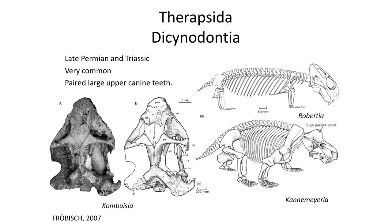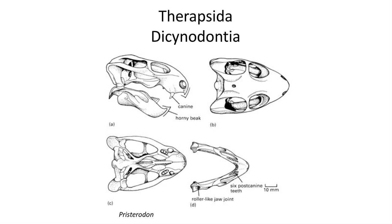The next group of Therapsida are the Dicynodontia, or two dog teeth, a common fossil group from the Permian and into the Triassic. They are the most common of the synapsid reptiles, particularly in the later half of the Permian, with hundreds of fossils known from South America and South Africa. The skulls are really unique in having large canine teeth as well as a beak-like structure for nipping vegetation. The post-canine teeth are minimal, with the jaw likely used like modern turtles in cropping and swallowing.